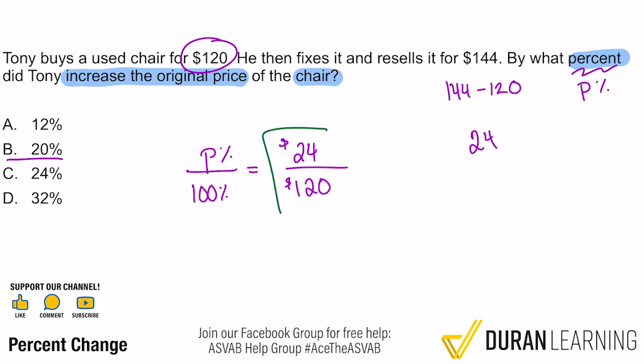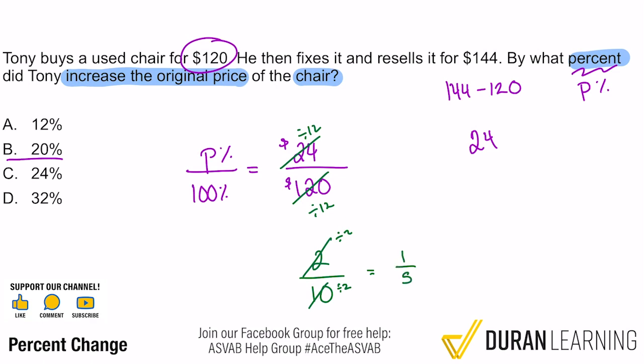With 24 and 120, we can simplify. They're both divisible by 2, 3, 4, or 6 — but the greatest common factor is 12. Dividing both by 12: 24 ÷ 12 = 2, and 120 ÷ 12 = 10. We can simplify further since 2 and 10 are both divisible by 2, giving us 1 over 5. So we can make that one-fifth and keep things simple.